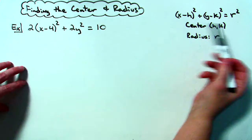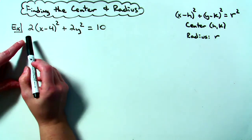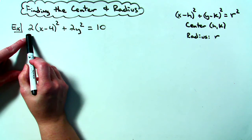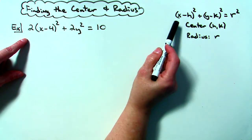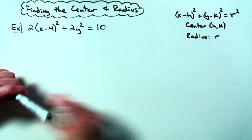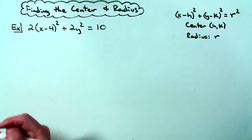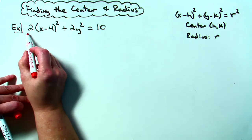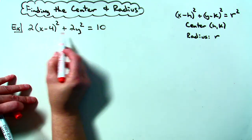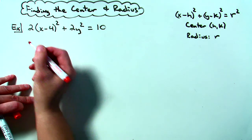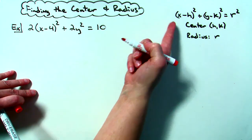However, equations will not always be in that form. In this one, I've got a leading coefficient of 2 and a coefficient also in front of the y-squared term, so I'm not exactly in standard form. To be able to use this formula and easily find the center and the radius, you need to get rid of those. In this one, I can divide through by 2 — it's not going to alter the equation in any way, and then I will have the form that I need.